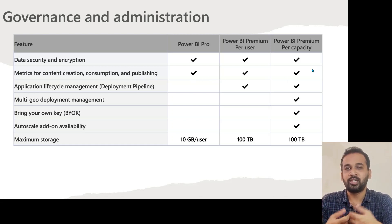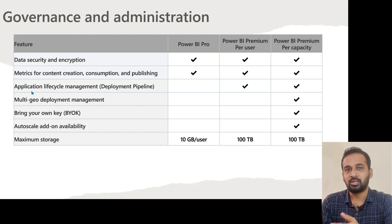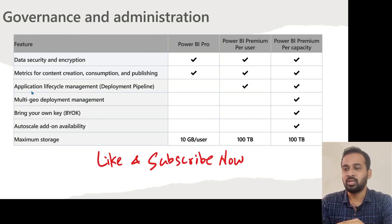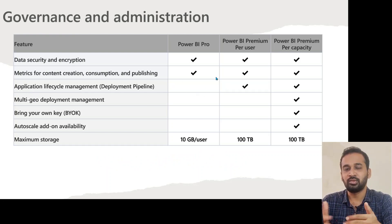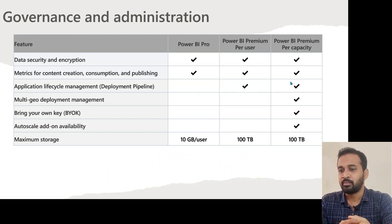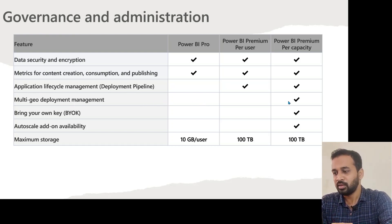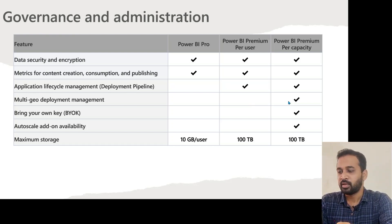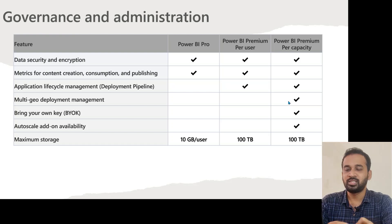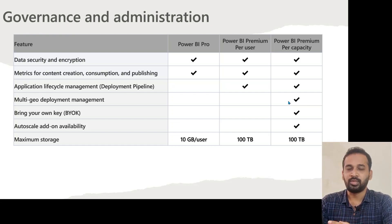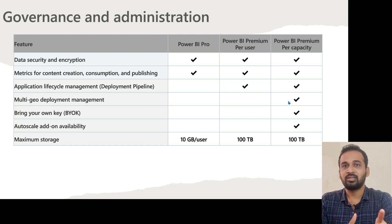With multi-geo, you can assign different workspaces to different regional locations — for example, one in Europe and one in Asia or US — based on business needs. You can change your capacity based on those needs. Bring your own key (BYOK) encryption is only available in Premium Per Capacity. The recently introduced auto-scale add-on availability for Gen 2 is also only available for Premium Per Capacity, not for Pro or Premium Per User.